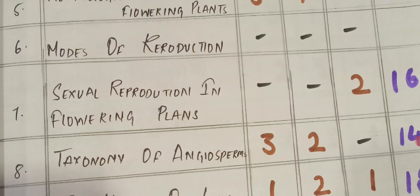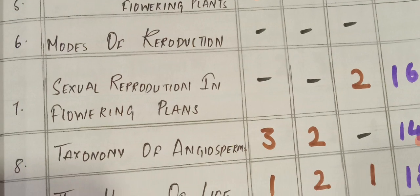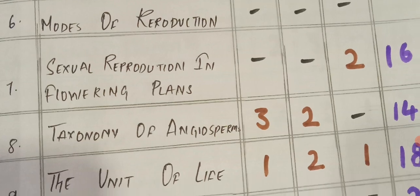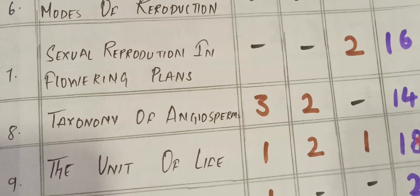6th chapter is deleted. 7th chapter: 2 LAQs you will get this year from the subject Botany. Taxonomy: 3 VSCQs and 2 SCQs.